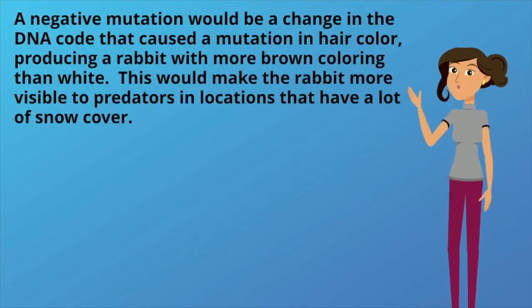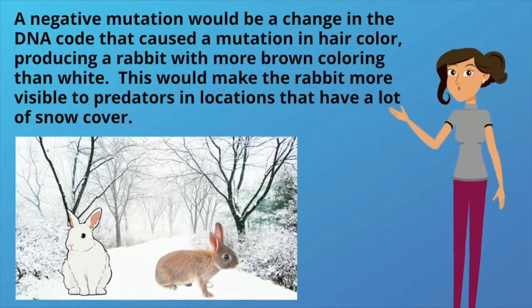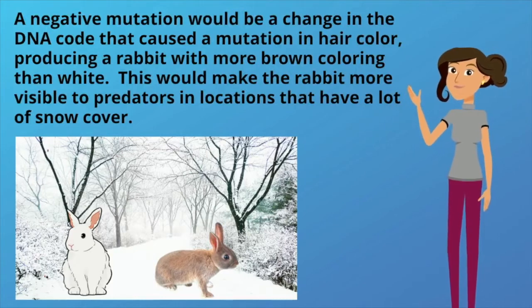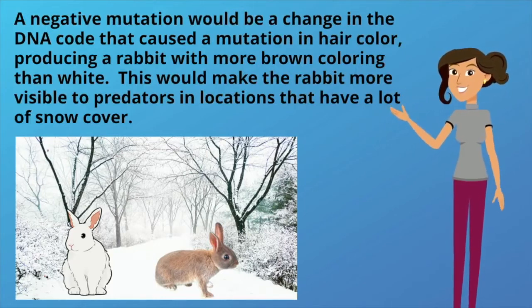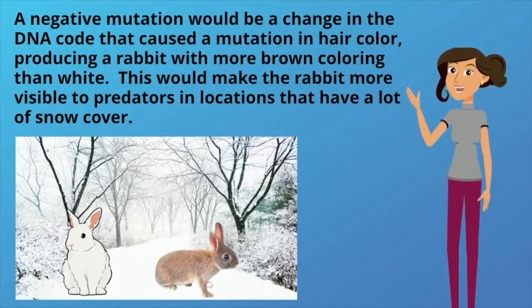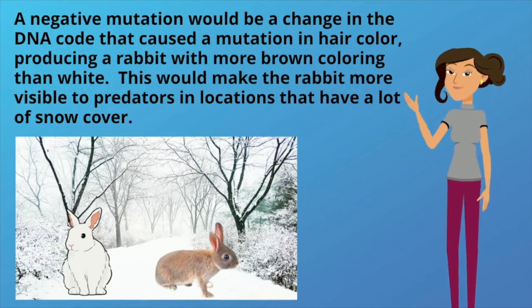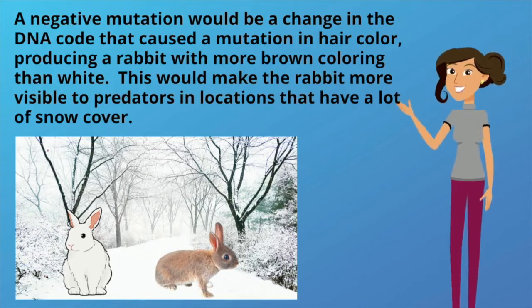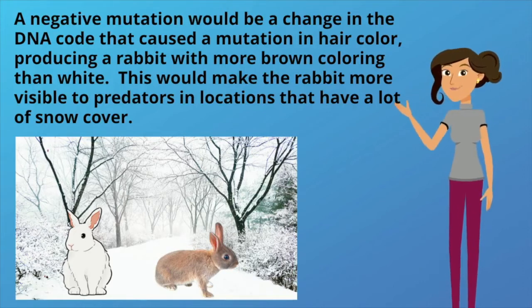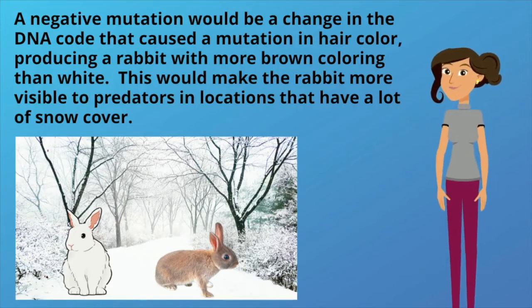An example of a negative mutation would be a change in the DNA code that caused a mutation in hair color, producing a rabbit with more brown coloring than white. This would make the rabbit more visible to predators in locations that have a lot of snow cover.